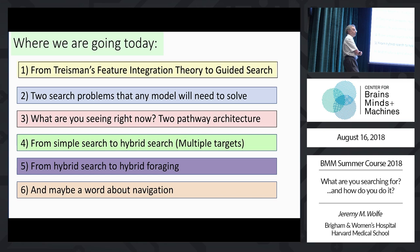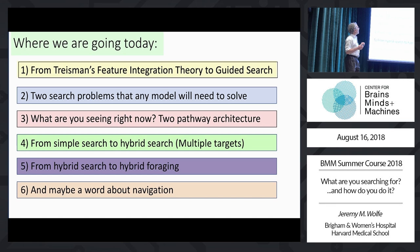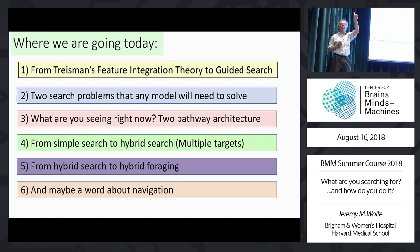The starting place for modern work on visual search — the problem of how you find what you're looking for in a world full of things that you're not looking for — is Anne Treisman's feature integration theory. I'll tell you a bit about the founding data for that, and then the data that leads to modifications by people like me. My version of the modification is called guided search. I'll also tell you about a few problems that any model of human visual search behavior would need to solve, and then I'll start trying to tie the problem of search to the broader question of what you're seeing right now.